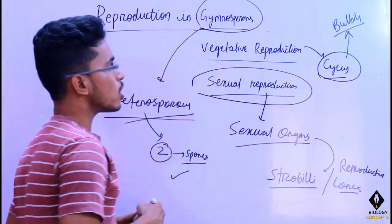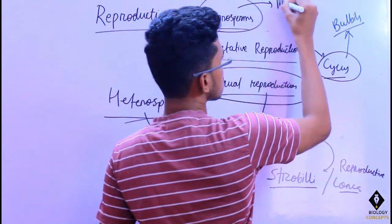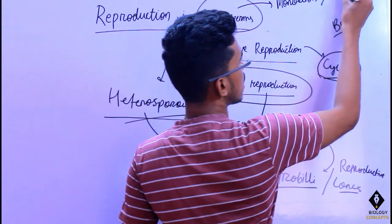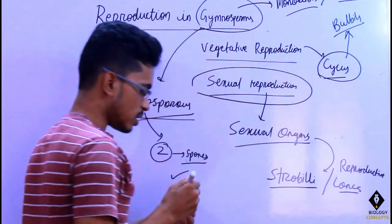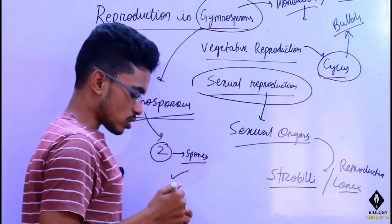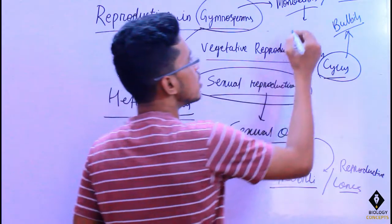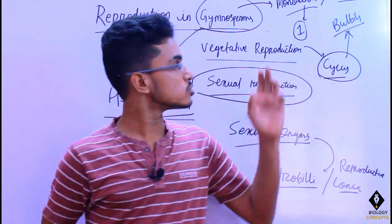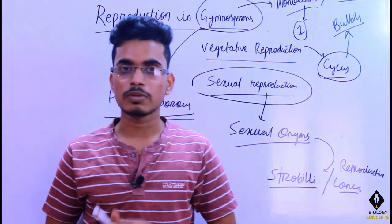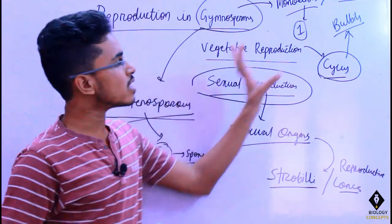Another point about gymnosperms is that they may be monoecious or dioecious. Monoecious means both the male and female sex organs are present in a single sporophyte. In the case of dioecious, both the male and female sex organs are present in two different respective sporophytes. That is the main difference between monoecious and dioecious.